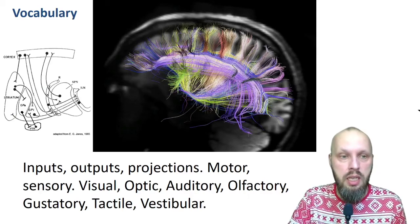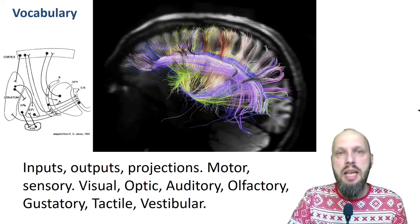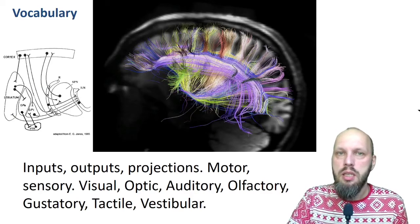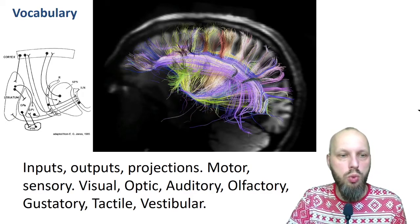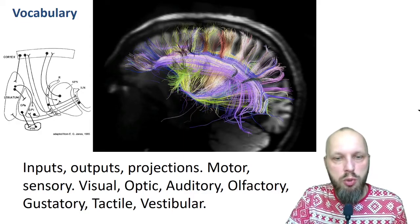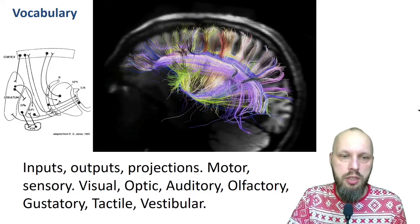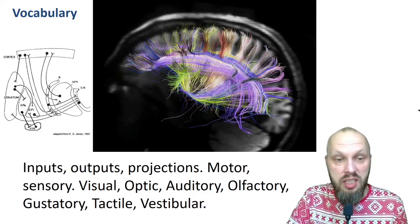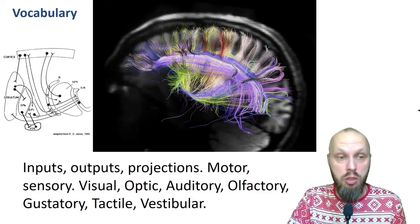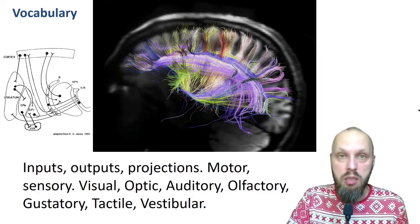Next: input, output, projections, motor, sensory, visual, optic, auditory, olfactory, gustatory, tactile, and vestibular. Starting with inputs, outputs, and projections — from these very words you can figure out that we start to think about the brain as a system with parts that interact with each other.